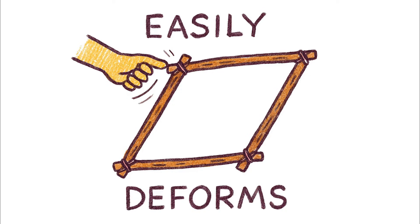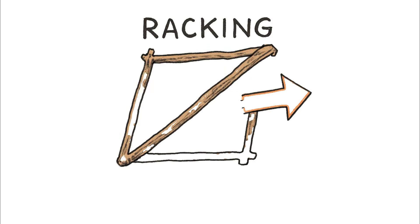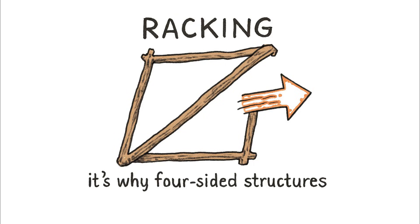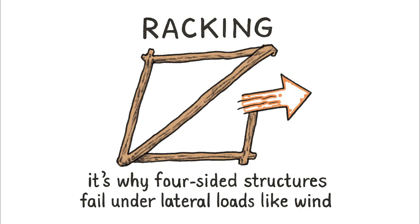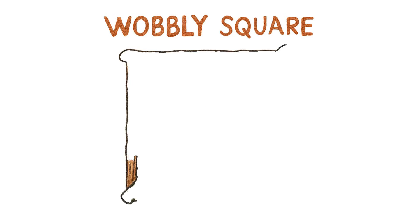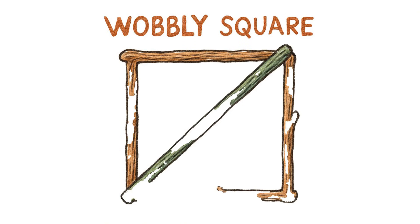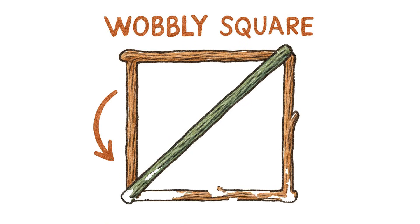It leans over into a parallelogram. This collapse is called racking, and it's why four-sided structures fail under lateral loads like wind — the corners simply pivot. Now, imagine taking another branch and placing it diagonally across that same wobbly square, connecting two opposite corners.